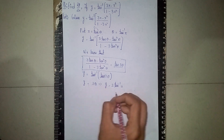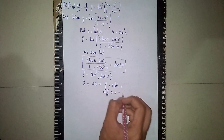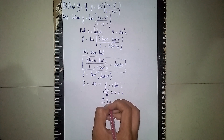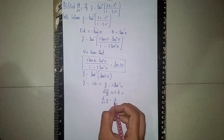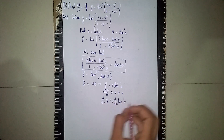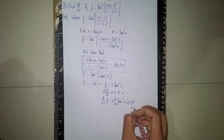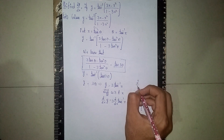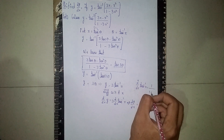Now differentiate with respect to x. So dy/dx of y is equal to dy/dx of 3 tan inverse x. Here 3 is a constant and it is multiplying, so it comes outside. Now the derivative of tan inverse x is equal to 1 by (1 plus x squared). This is a formula — highlight it in a box whenever you write any formula.